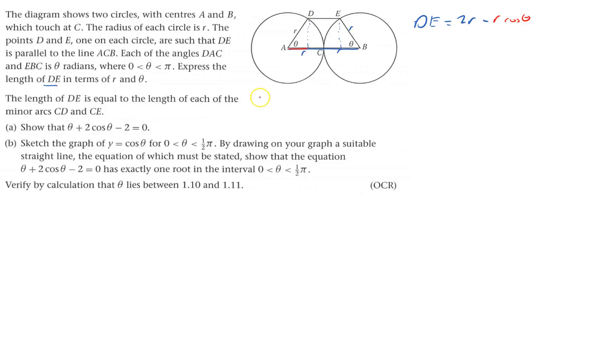We've got SOH-CAH-TOA, and we want to find the adjacent. Adjacent is cos theta times the hypotenuse, so it's r cos theta. But it's also going to be taken away that one—that's also r cos theta—so it'll be minus 2r cos theta.